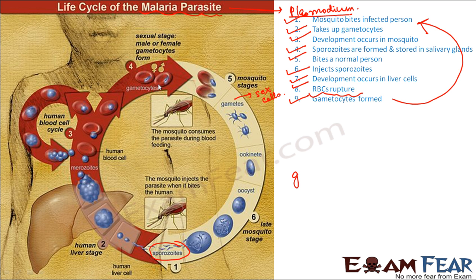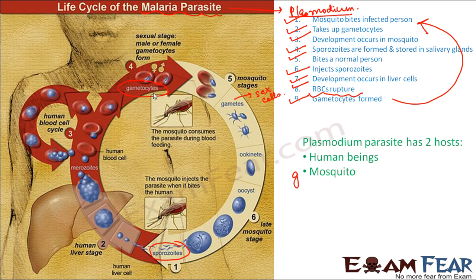Plasmodium spends half of its lifetime inside the body of the mosquito, where it forms the sporozoids, and half of its life inside the human body, where it forms the gametocytes. You don't need to memorize the detailed steps at this stage — you will study them in higher classes. Basically, the Plasmodium parasite has two hosts: one is human beings and the other is the mosquito.